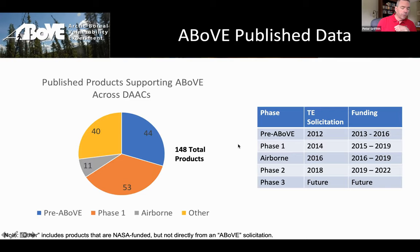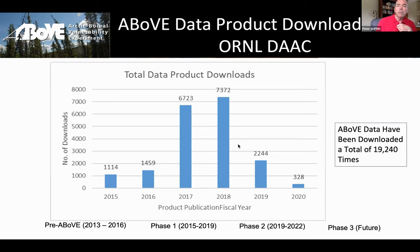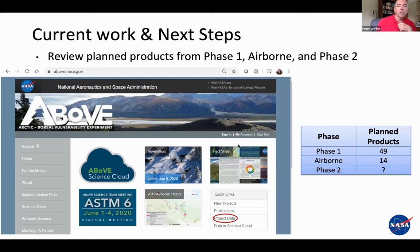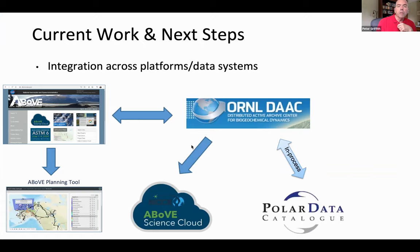ABOVE data have been downloaded about 19,000 times from Oak Ridge alone. Oak Ridge has been supporting us extraordinarily well — helping with both the archiving of data and also porting search-and-discovery metadata to the Canadian Polar Data Catalog, which is one of our requirements that comes with permitting for flying and conducting ground research in the territories of Yukon and Northwest Territories.